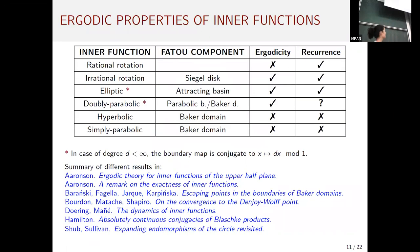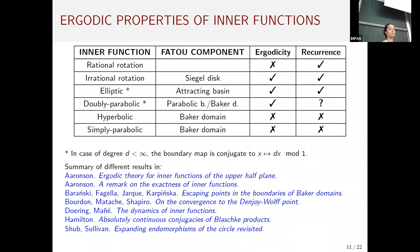A table summarizes the ergodicity and recurrence for the different Fatou components. Most importantly for the rest of the talk: in the parabolic (w-parabolic) case, which corresponds either to parabolic basins or Baker domains, the map is always ergodic. It may or may not be recurrent in general, but in the case of finite degree, it is always recurrent.